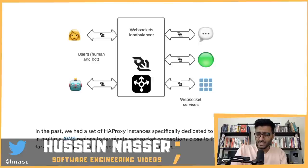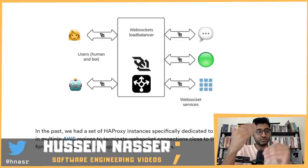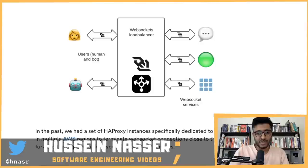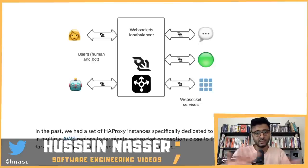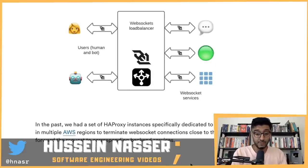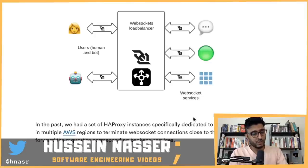We know how HAProxy does stateful proxying — we've talked about it many times. When it sees an Upgrade request, HAProxy switches from layer 7 immediately to layer 4 proxying, hooking you to one TCP connection on the backend. Everything is HTTP/1.1 with TLS — they didn't specify otherwise, that's my assumption.